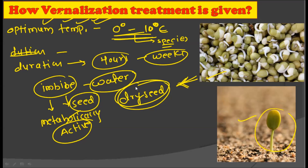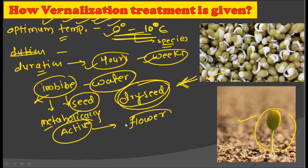If you take dry seeds, vernalization will have no effect on them. These metabolically active seeds are given the optimum chilling temperature during their early stages of development. This duration may vary from some hours to weeks depending on the species. After giving this treatment, these plants will naturally flower earlier than the period required under normal circumstances.